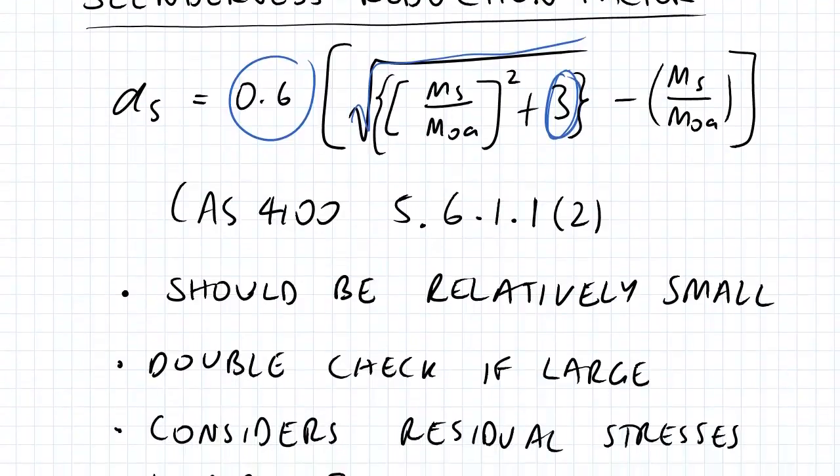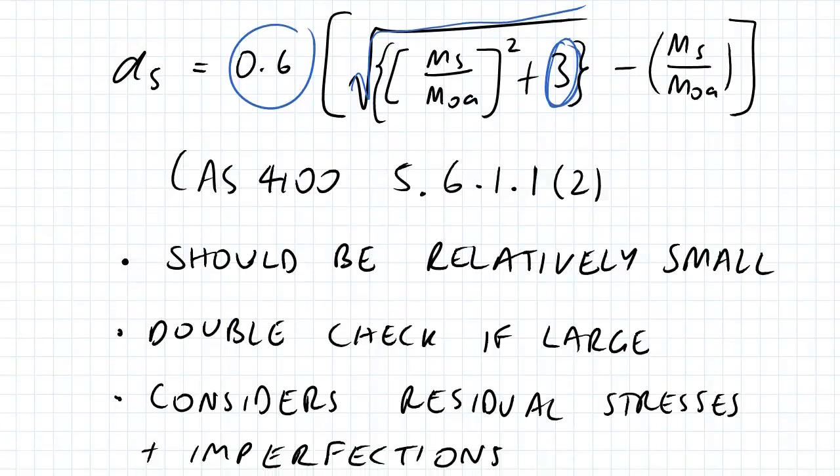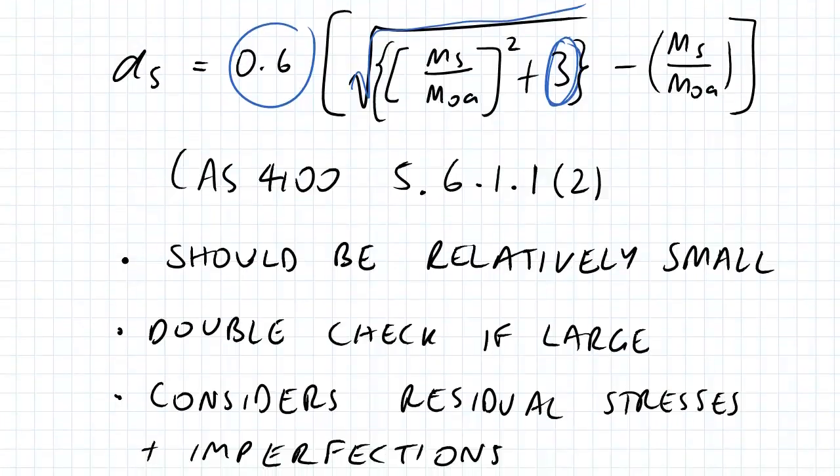That's from AS4100 Section 5.6.1.2. This value should be relatively small. I would double check if it's large, and especially if it's greater than one, that would raise a few eyebrows.